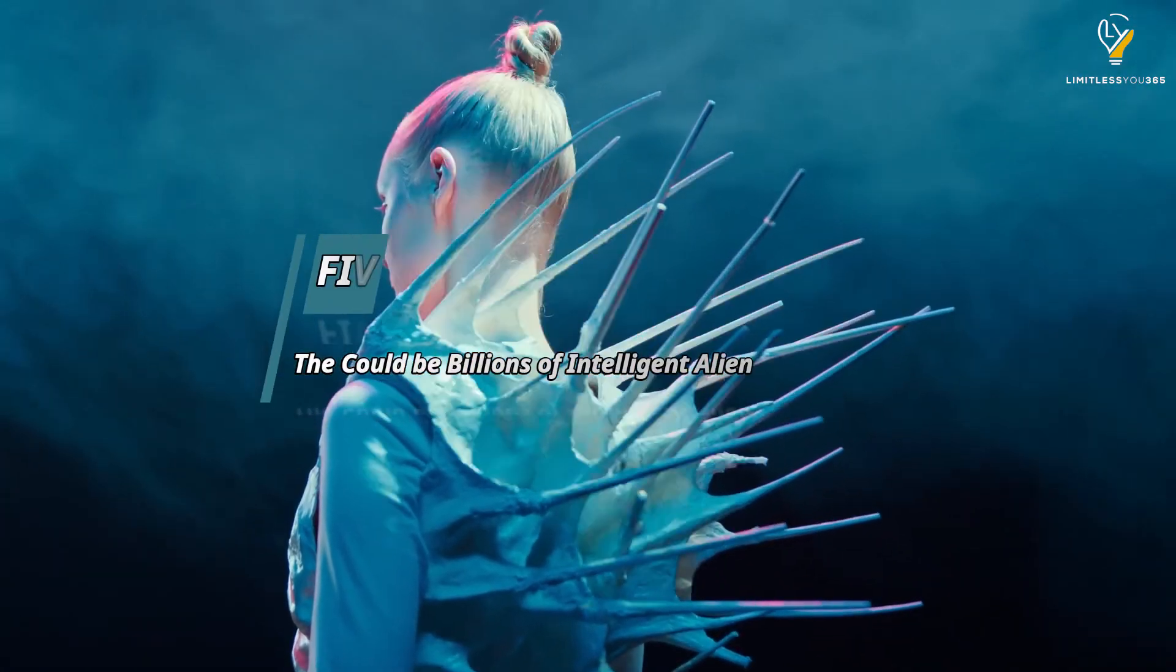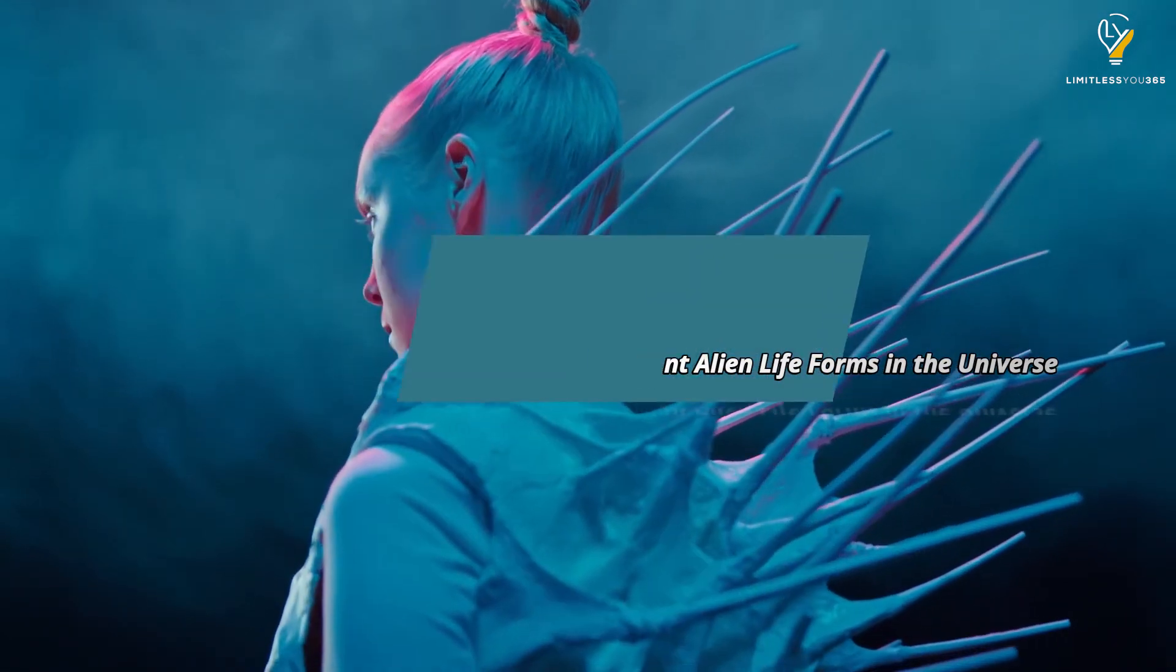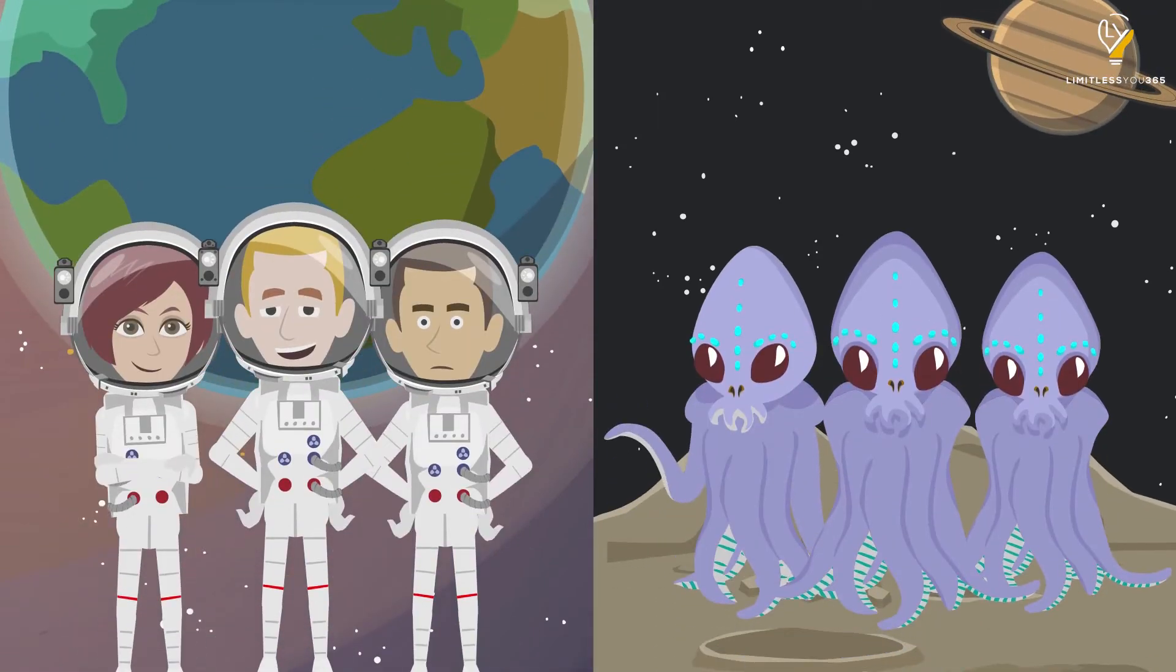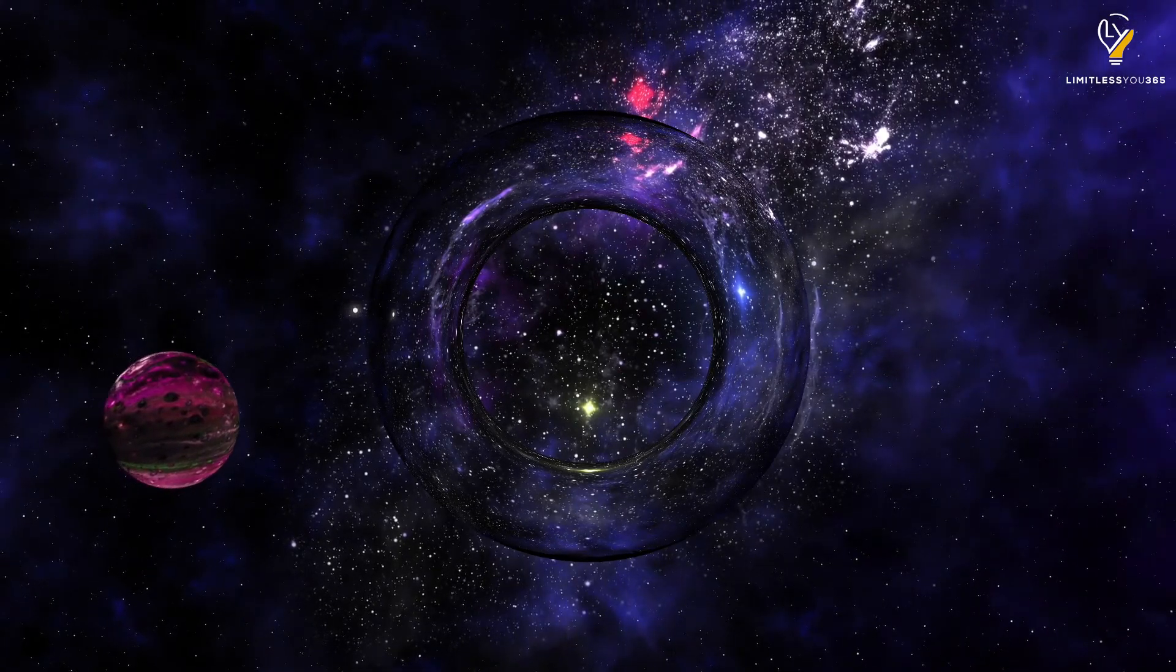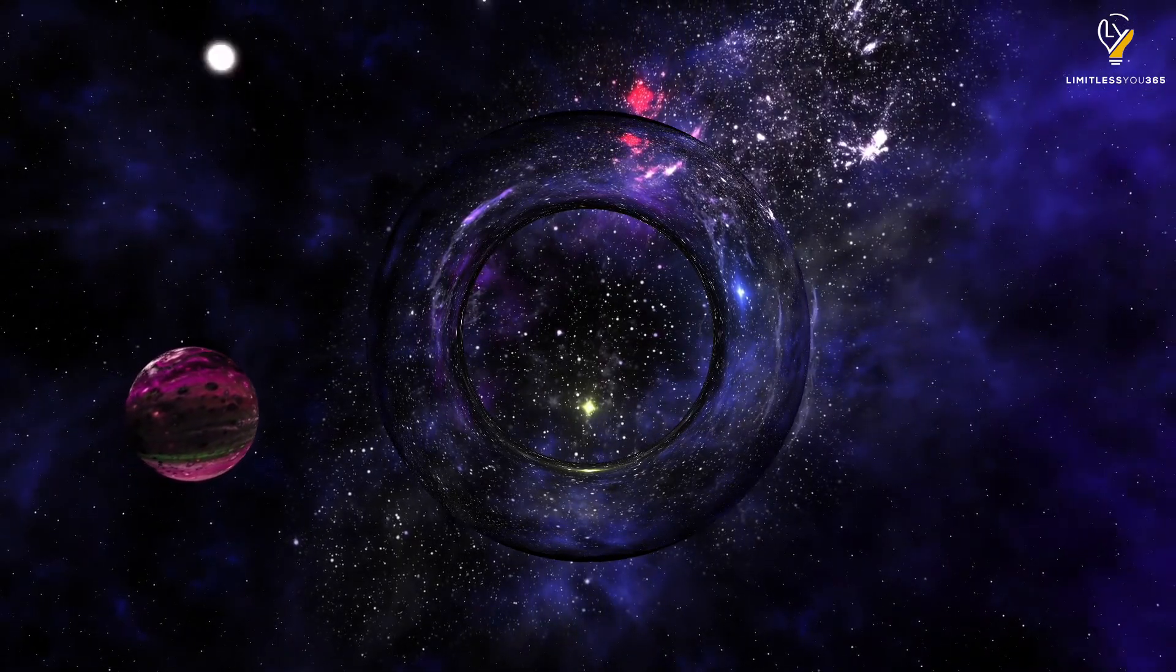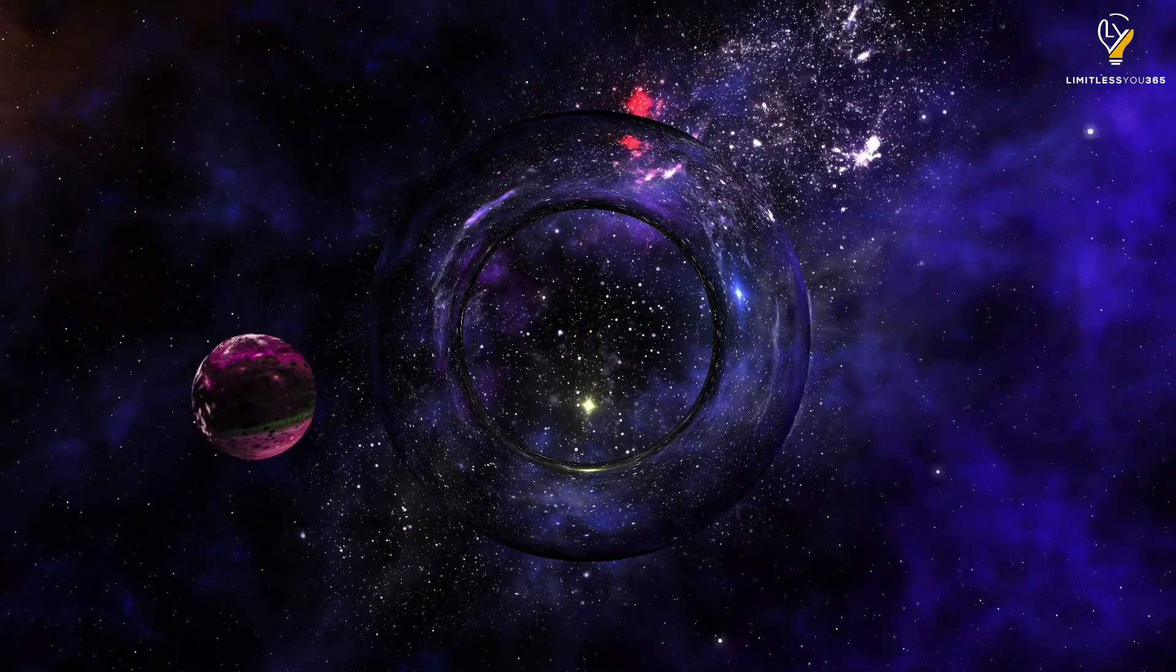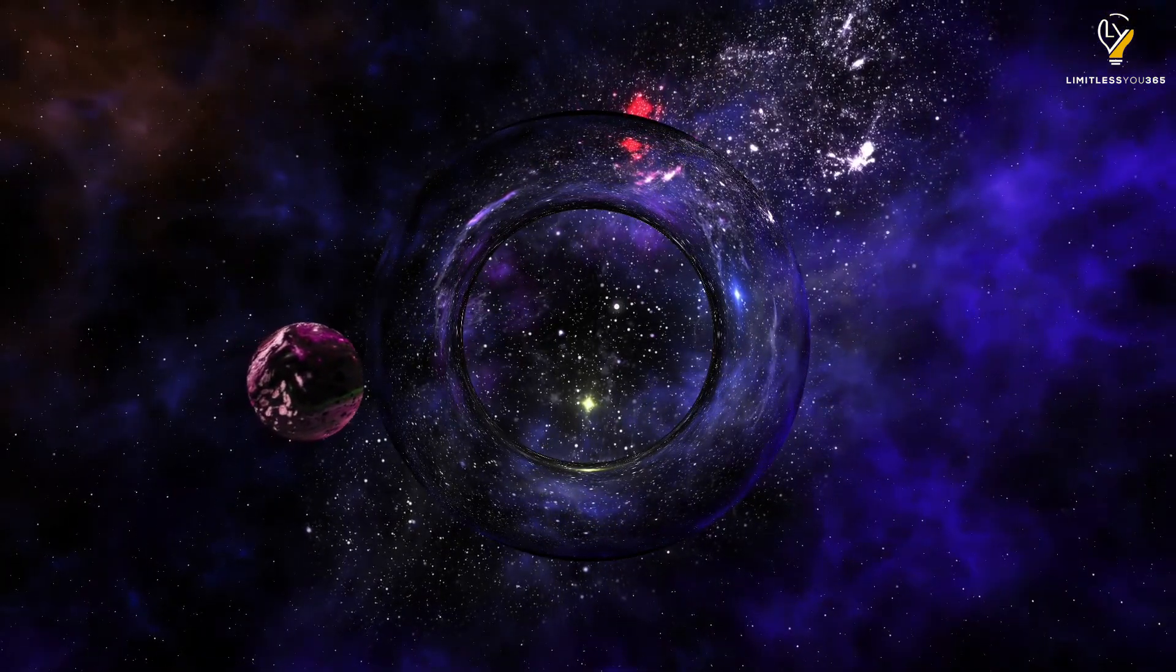Number fifteen: There could be billions of intelligent alien lifeforms in the universe. This is a pretty mind-blowing thought. Scientists have long suspected that there could be intelligent alien lifeforms out there somewhere in the universe, and recent discoveries have only bolstered this idea. They've found that there are billions of planets that could support life, so it's not such a stretch to believe that some of those planets would have intelligent inhabitants. Who knows? We might be rubbing elbows with them right now, and we just don't know it.